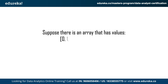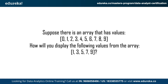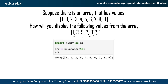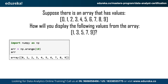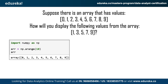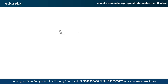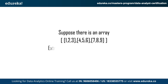Suppose there is an array with values 0 through 9. How will you display the values 1, 3, 5, 7, 9? If we observe the values that need to be extracted, we can see that all of those numbers are just odd numbers. All you need to do is create a list with the values given and then check for the odd numbers — you can do this by using the modulus operator.